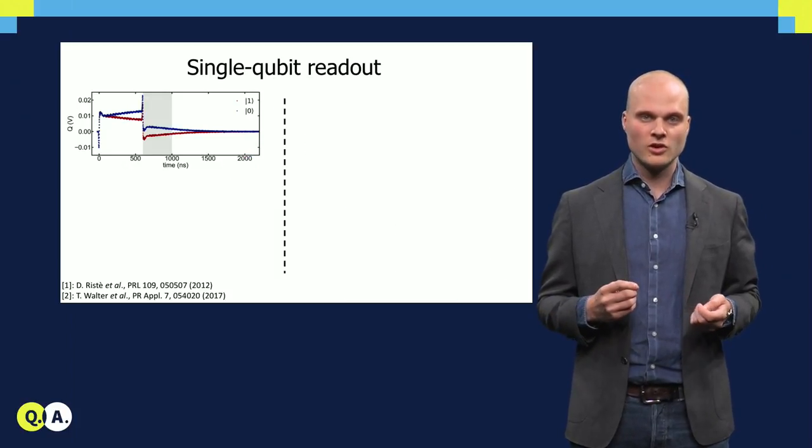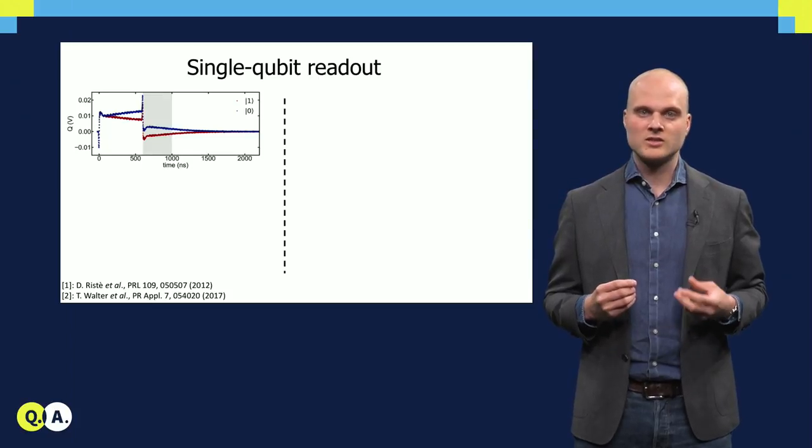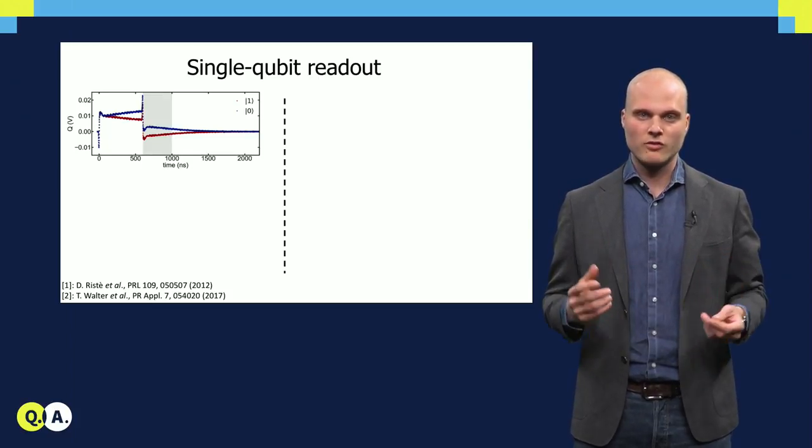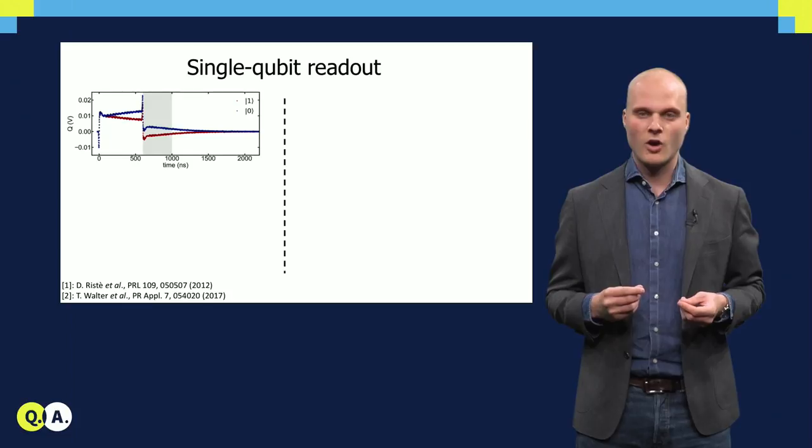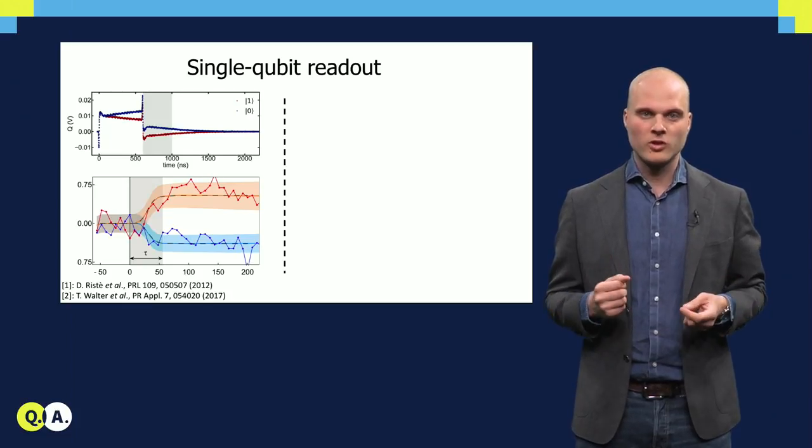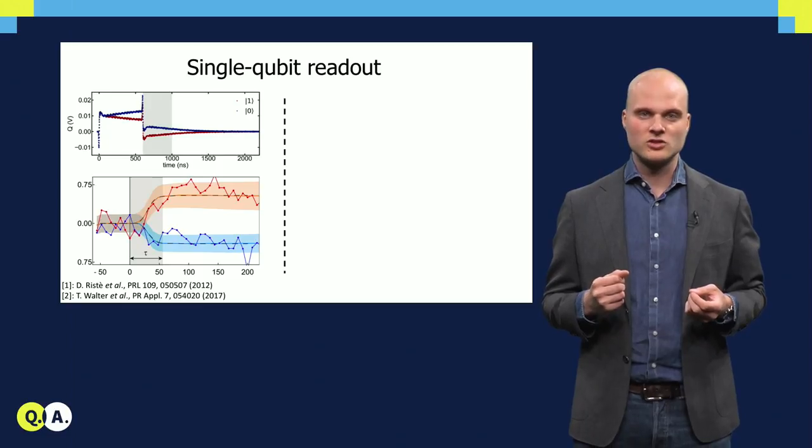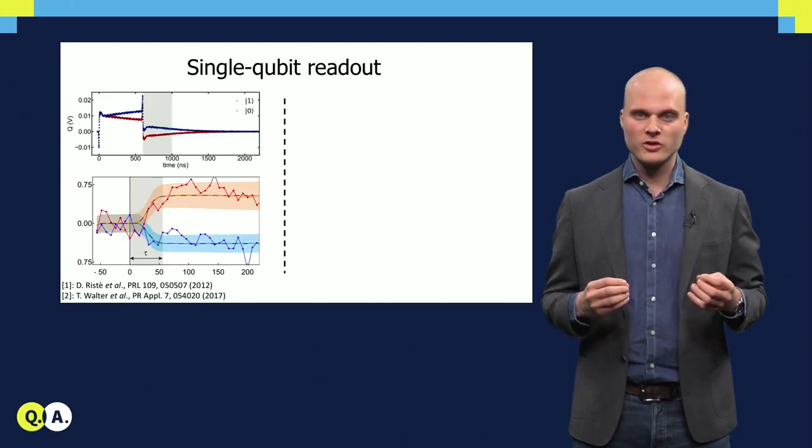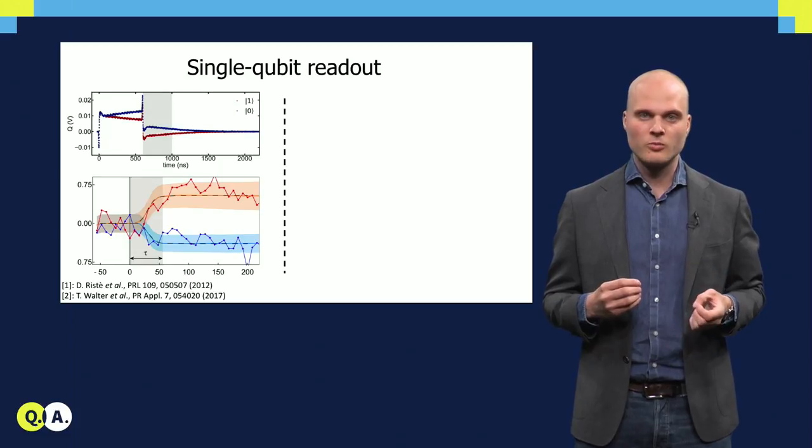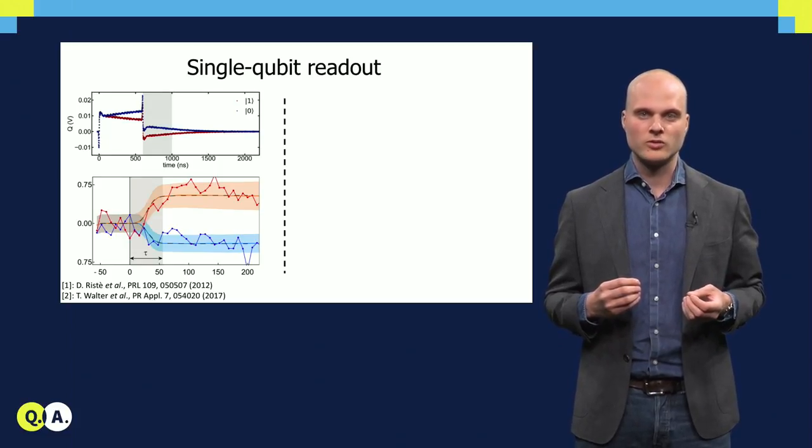The traces I've just shown look very clean and distinguishable, as they are averaged over thousands of measurements. However, for most real quantum protocols, we are required to discern the qubit state in just a single run. To avoid disturbing the quantum system, we can only use readout pulses that consist of a couple of photons.